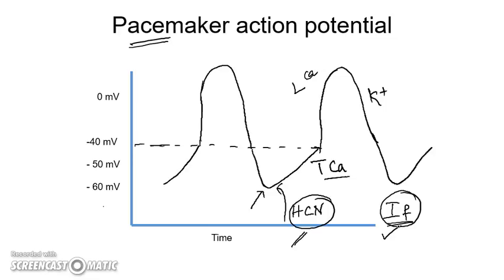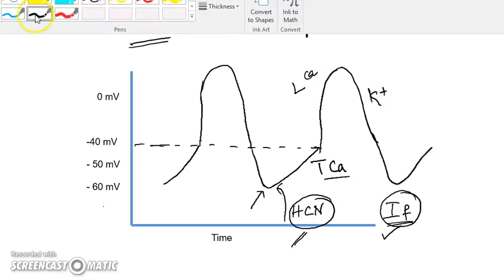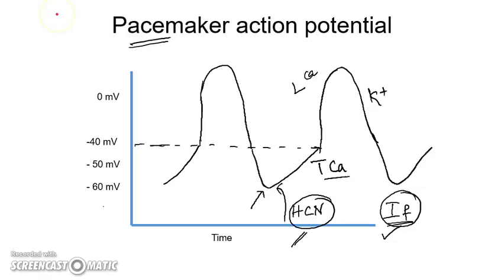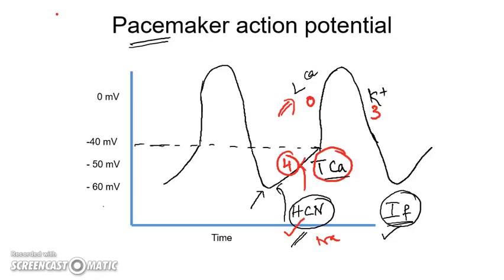The pacemaker action potential contains only three phases: Phase 4, Phase 0, and Phase 3. Phase 1 (early repolarization) and Phase 2 (plateau) seen in ventricular myocytes are absent here. Phase 4 is the pacemaker potential composed of HCN sodium channels and T-type calcium channels. Phase 0 is due to L-type calcium channel opening. Phase 3 repolarization is due to potassium ions going outside the cell.